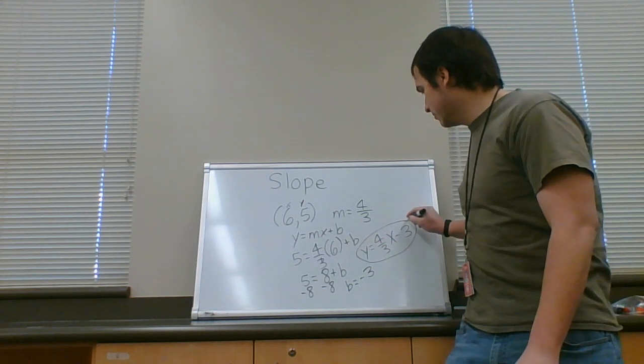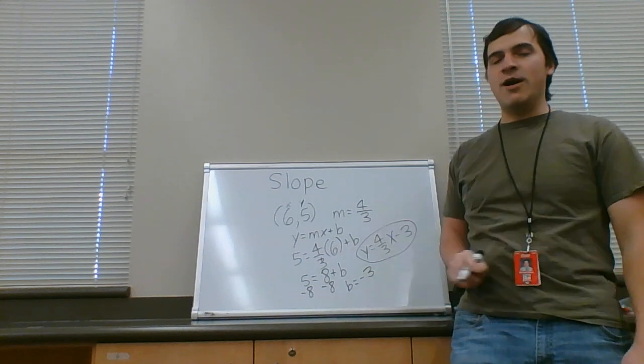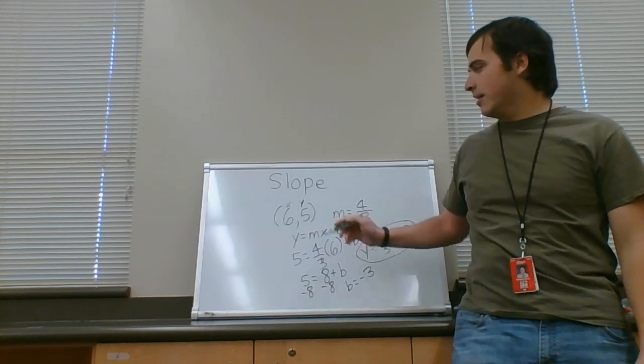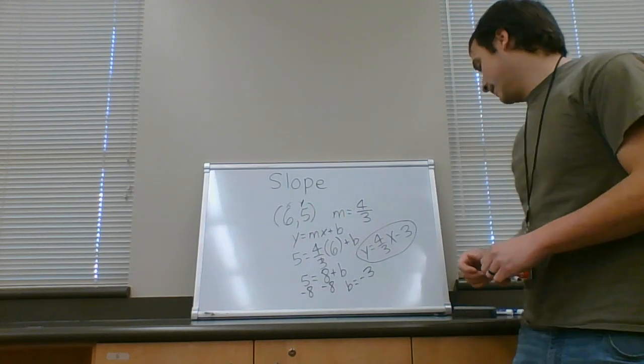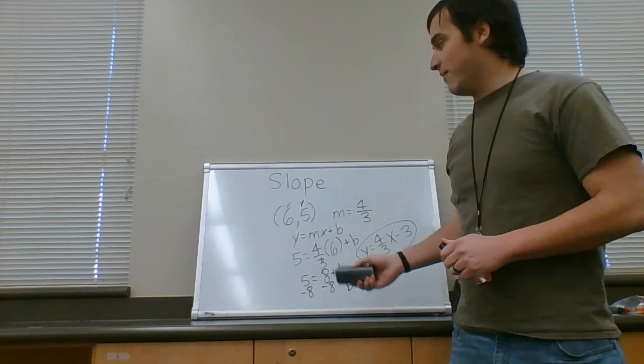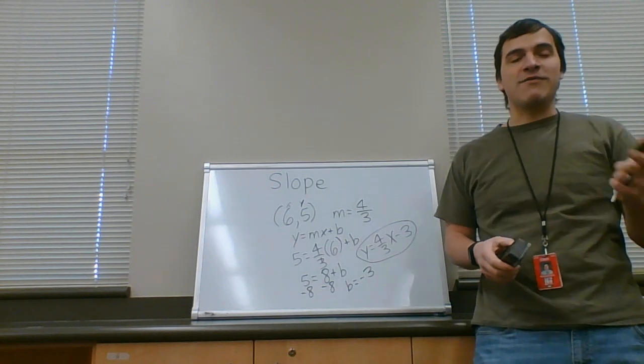That is your equation. All that stuff is a process, but this is the actual equation, which we can now graph, and you can check your answers too. If you graph this, it would go through this point with that slope, just like we did last time we were graphing. Alright, so that's how you find the equation given a point and the slope, and we found the slope given two points.